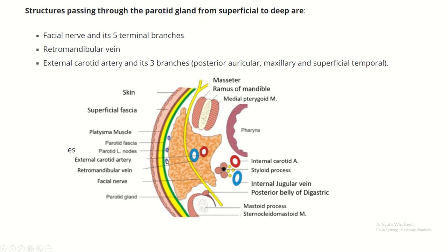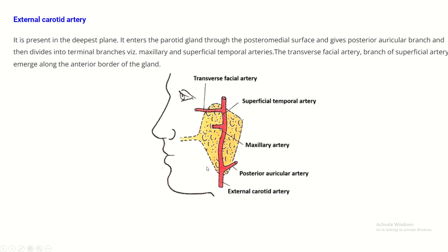Structures present within the parotid gland, from superficial to deep: the facial nerve, retromandibular vein, and external carotid artery. Three branches of the external carotid artery are also present within the parotid gland: the transverse facial artery, the maxillary artery, and the posterior auricular artery.